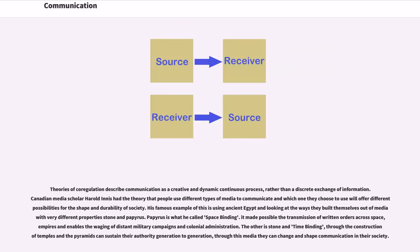Canadian media scholar Harold Innis had the theory that people use different types of media to communicate, and which one they choose to use will offer different possibilities for the shape and durability of society. His famous example of this is using ancient Egypt and looking at the ways they built themselves out of media with very different properties: stone and papyrus. Papyrus is what he called 'space-binding.' It made possible the transmission of written orders across space, empires, and enabled the waging of distant military campaigns and colonial administration. The other is stone, 'time-binding.' Through the construction of temples and the pyramids, they can sustain their authority generation to generation. Through this media, they can change and shape communication in their society.